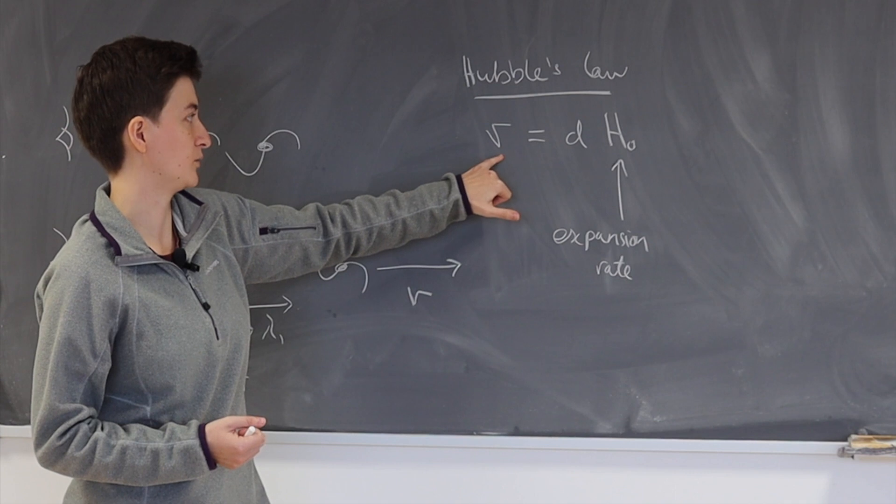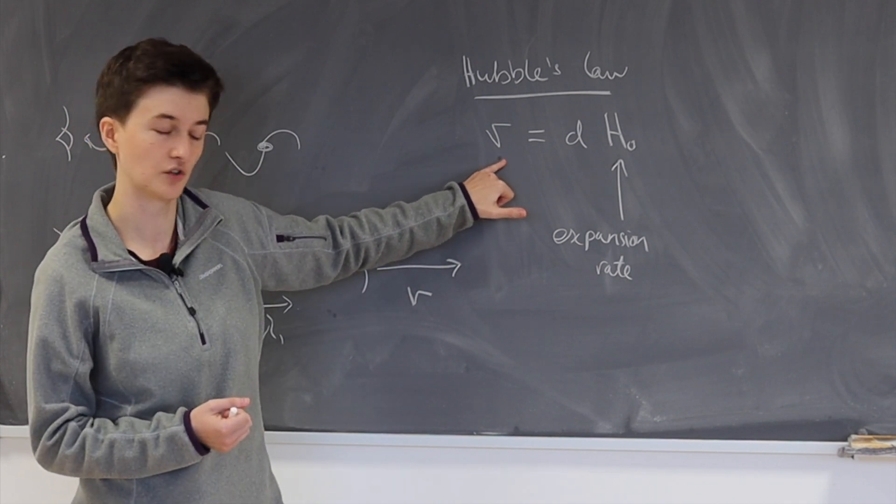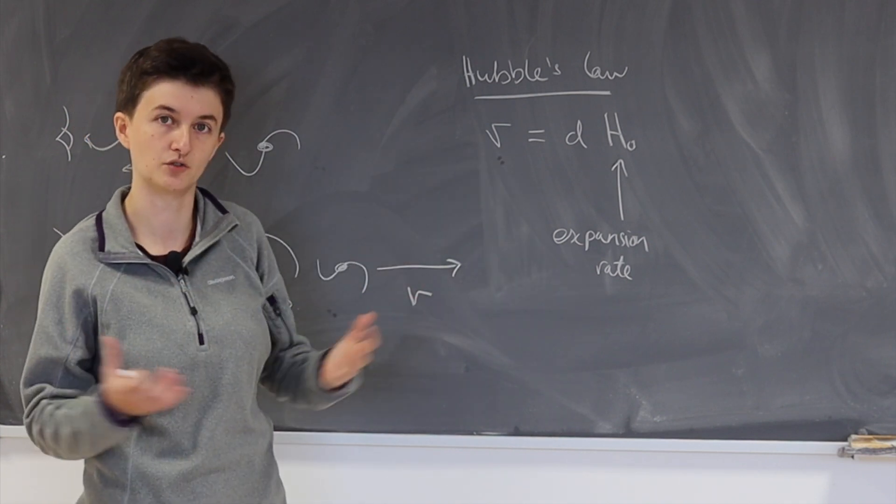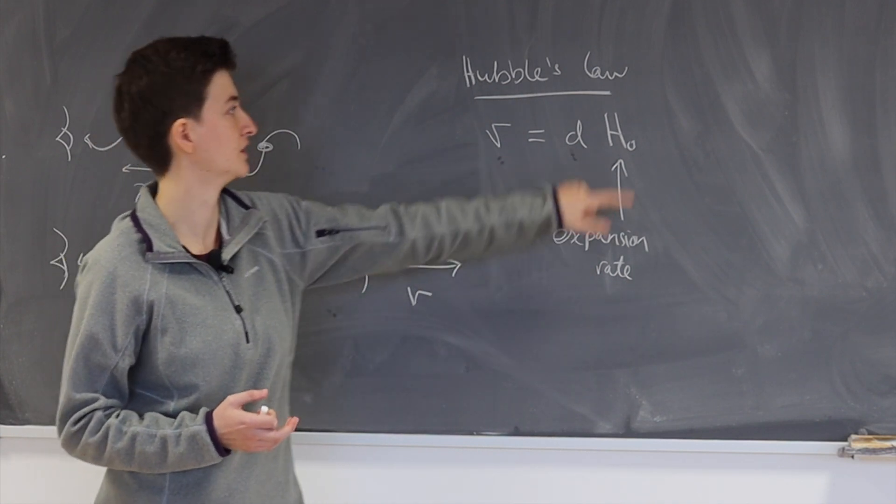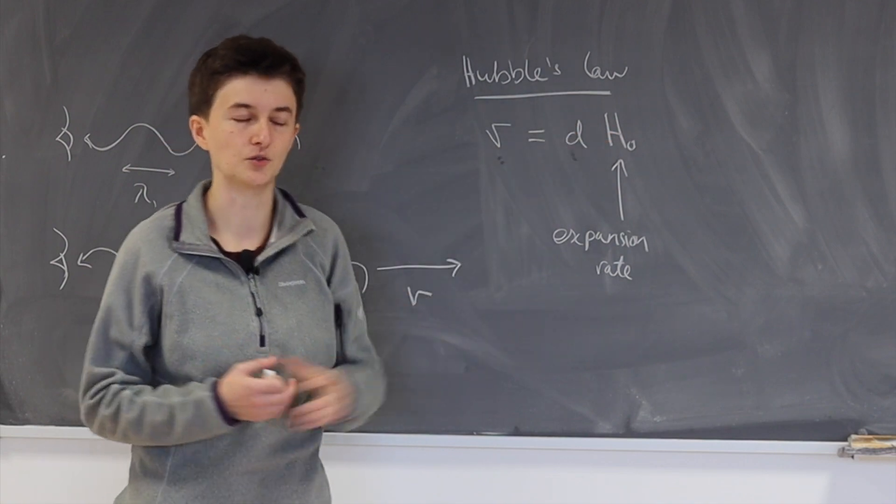So in other words, we would like to measure the recession velocity of certain objects, which we do through their redshift, and also their distance from us. With these two quantities, we're able to measure H0.